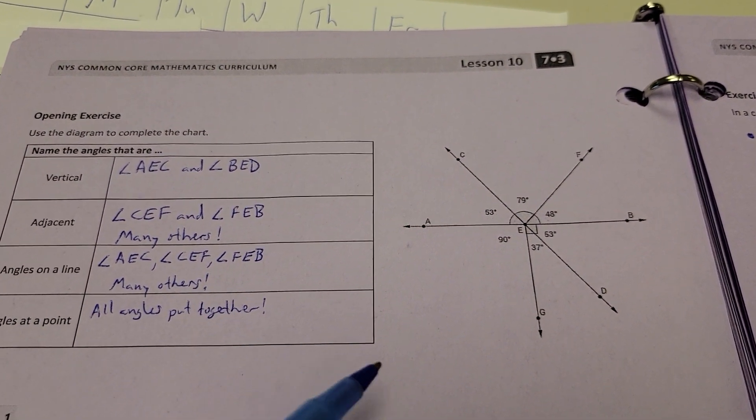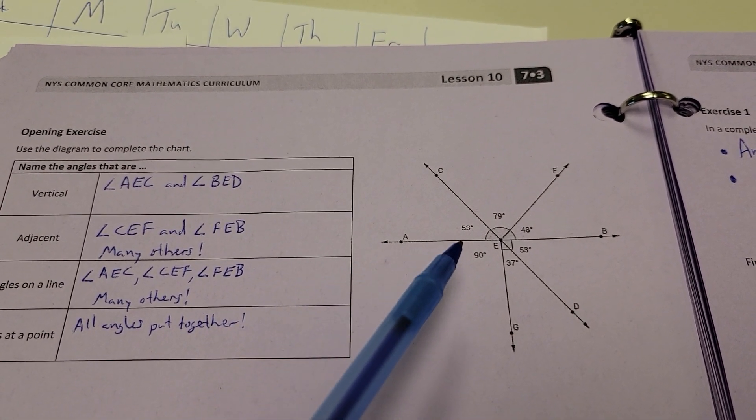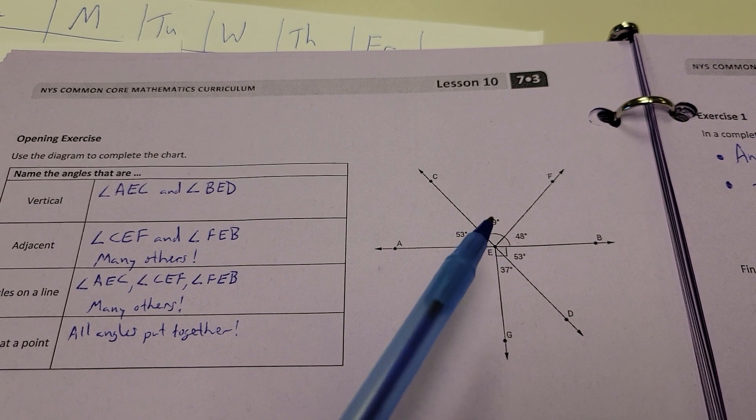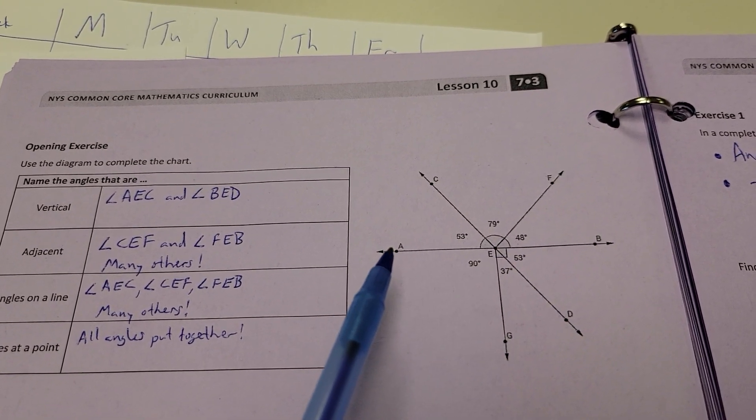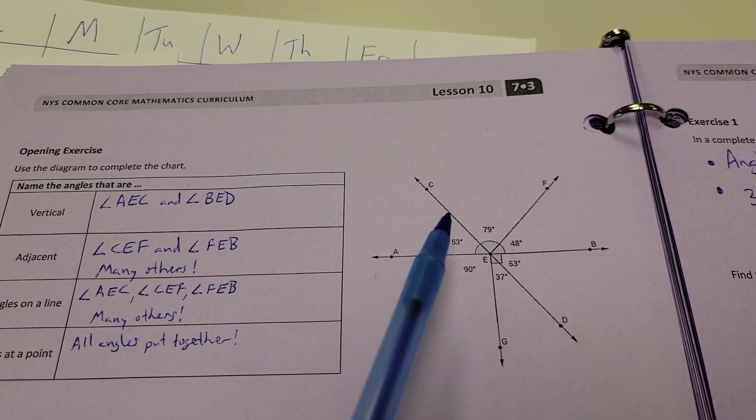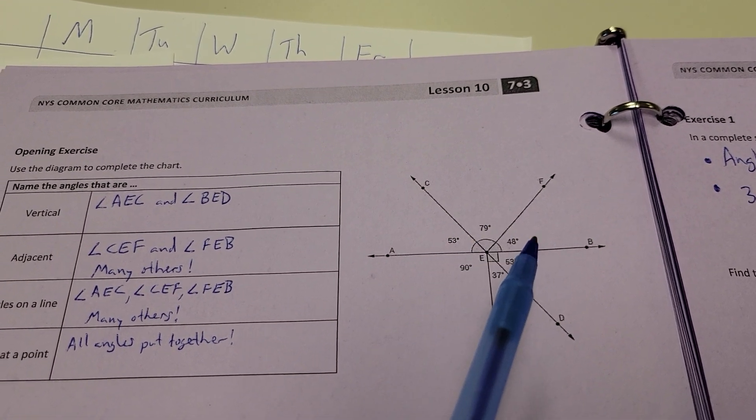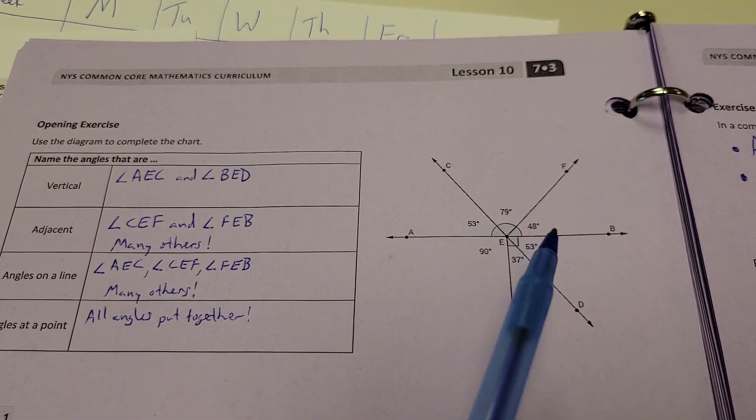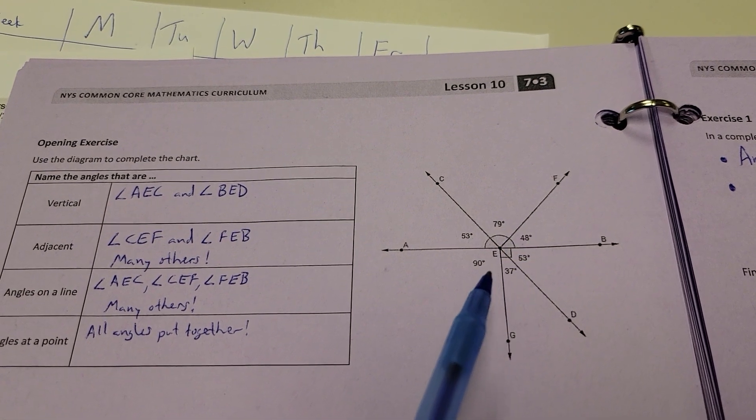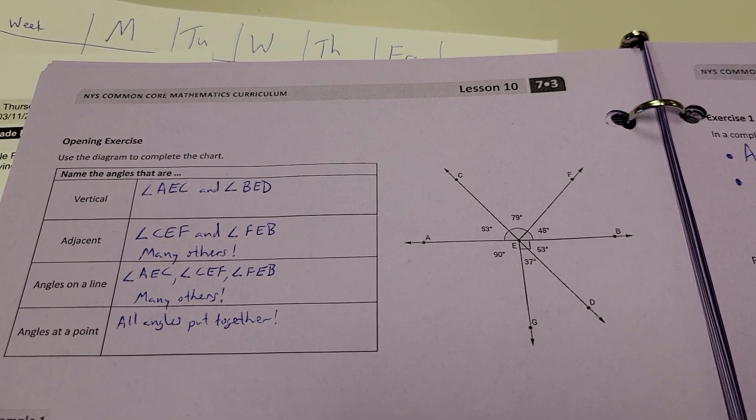Angles on a line. There's lots of possibilities here, too. Here's an example. AEC, CEF, and FEB. Notice how this is a straight line right here. I've got one, two, three angles that make up that whole straight line. And angles at a point, well, that's just all the angles put together. If you actually took all these numbers and add them up, you're going to get 360 degrees. So, angle at a point would be everything wrapping all the way around that center vertex.